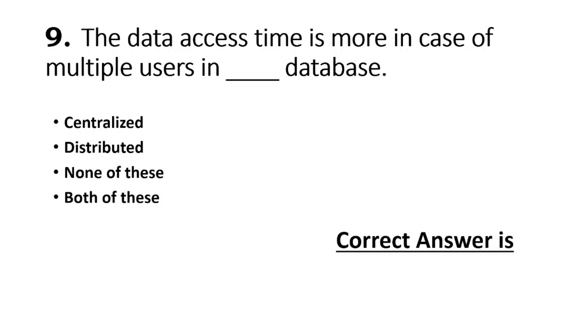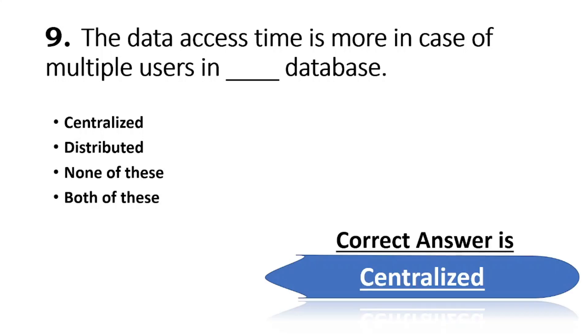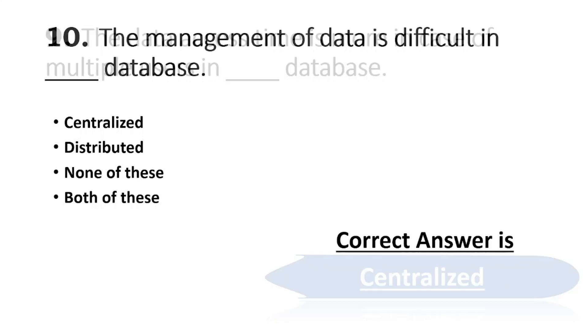Question 9: The data access time is more in case of multiple users in which database? When there are multiple users, centralized database has more data access time. The correct option is centralized.